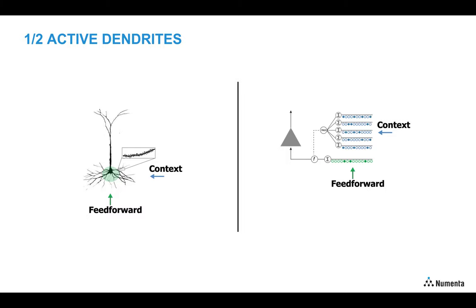The first aspect of our model are active dendrites themselves. Pyramidal cells have many dendritic segments which each act as independent pattern recognizers and can depolarize the soma. In our model on the right, we augment point neurons with multiple dendritic segments that each receive a context signal and affect the neuron's activity, turning it on or off.